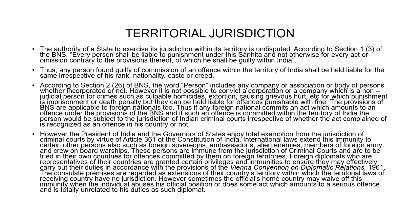They are subjected to their own jurisdiction. The moment they go back, they could be tried by their own country, but they are immune from jurisdiction of other countries. Foreign diplomats are representatives of their countries and that is why they are granted certain privileges and immunities. This is to ensure that they may effectively carry out their duties in accordance with the provisions of the Vienna Convention on Diplomatic Relations of 1961.